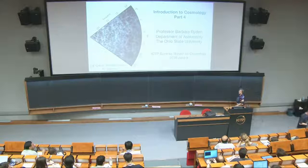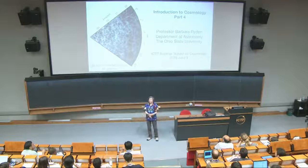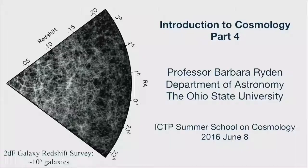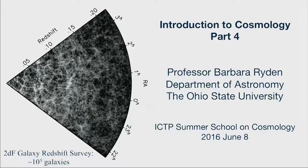Since I've reached the fourth and last of my lectures, it's time to confess that the universe is not really homogeneous and isotropic. If you look at the results of redshift surveys of galaxies, like the 2DF galaxy redshift survey seen here, you realize that once you have about 100,000 galaxies, rather than the trifling 41 galaxies that Arthur Eddington could list, then you have a nice picture of what's commonly called the cosmic web. Galaxies are not distributed uniformly through space. Instead, they tend to lie along long filamentary superclusters.